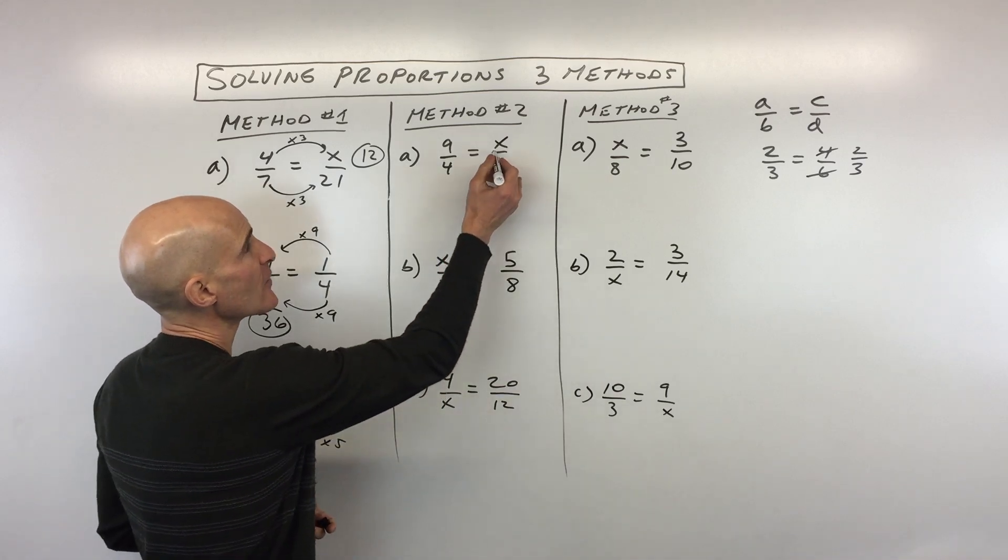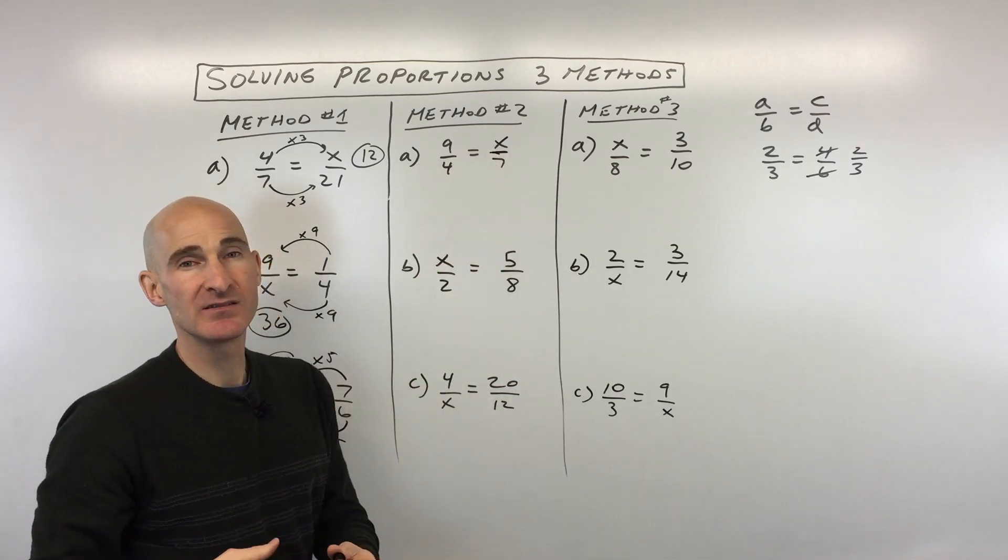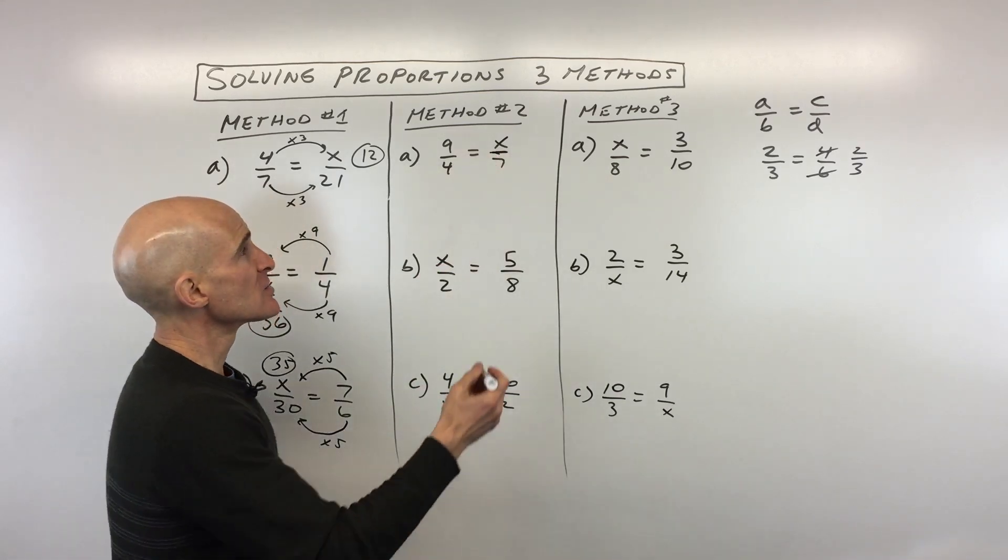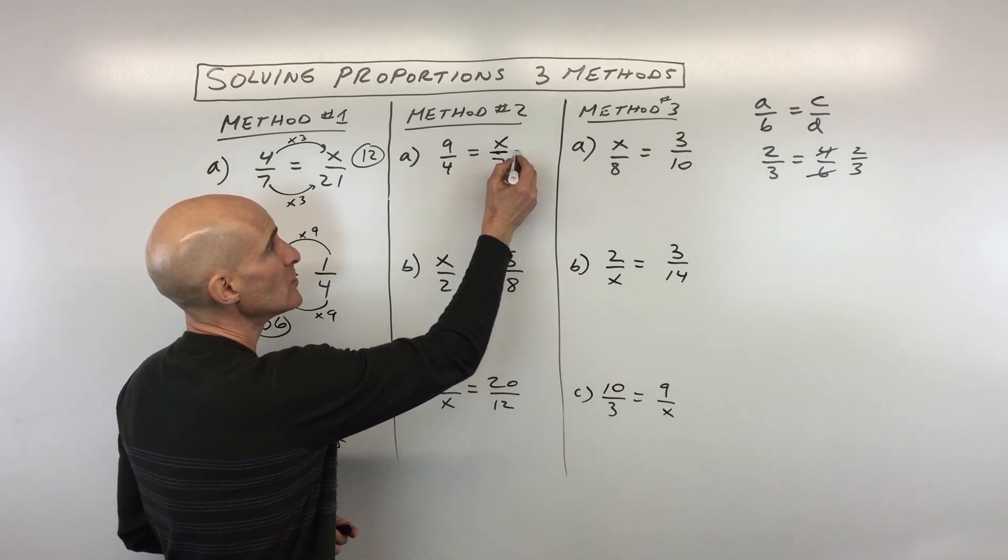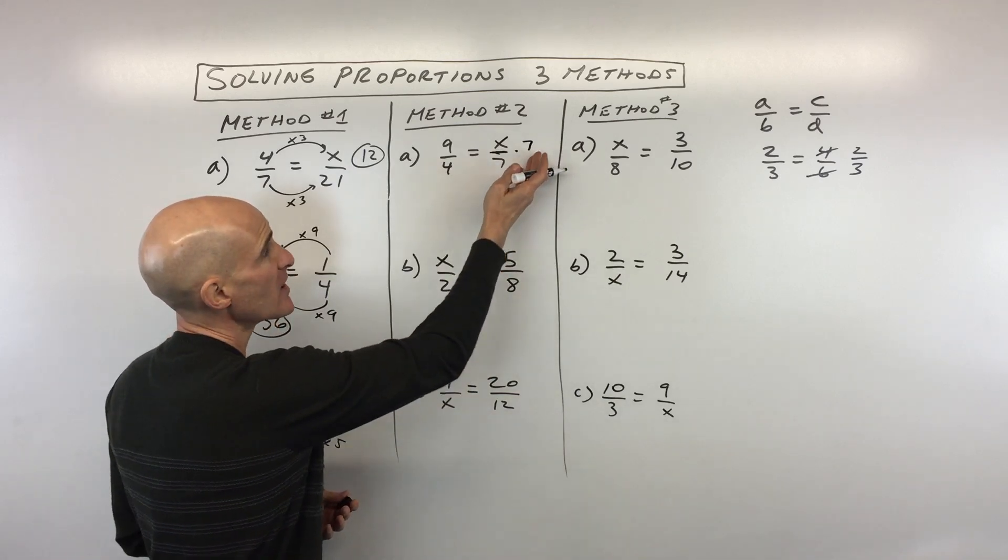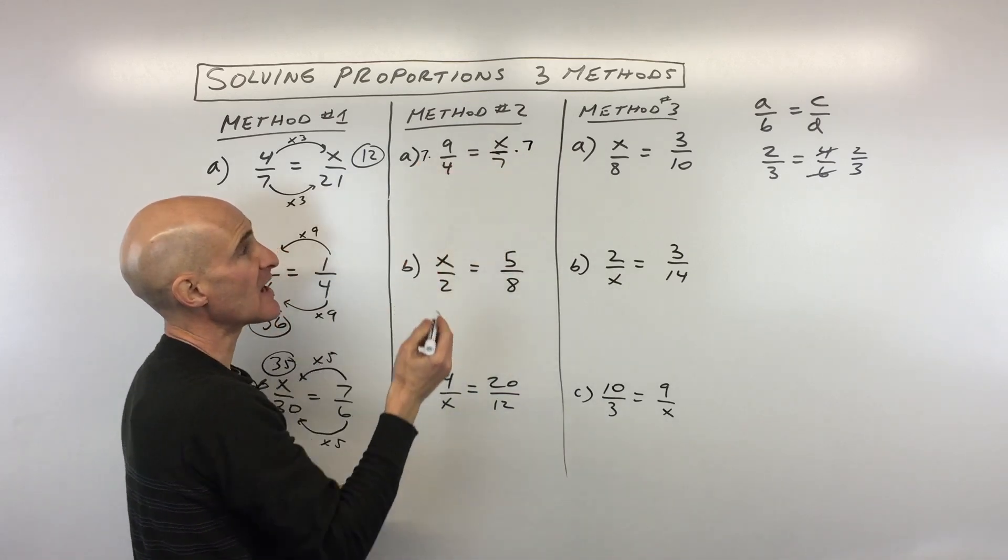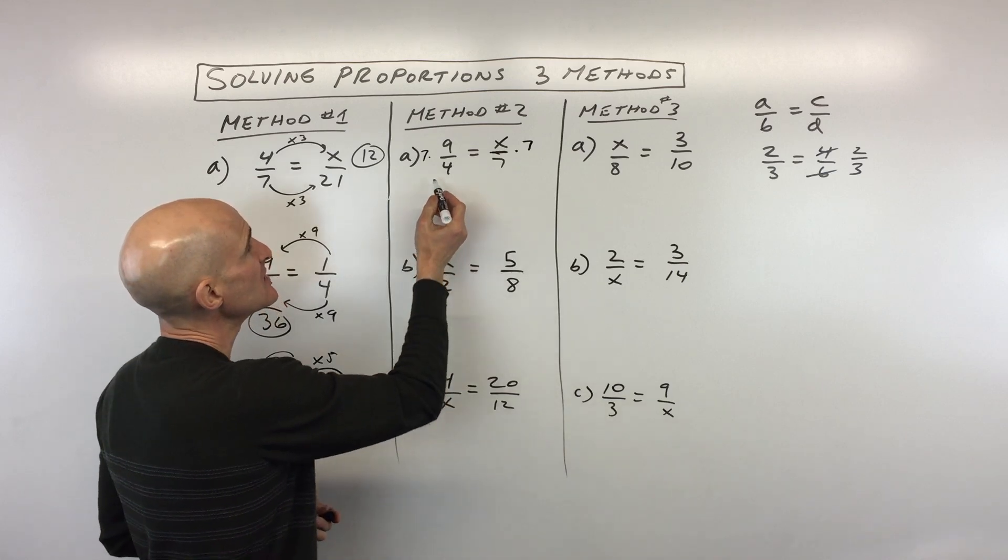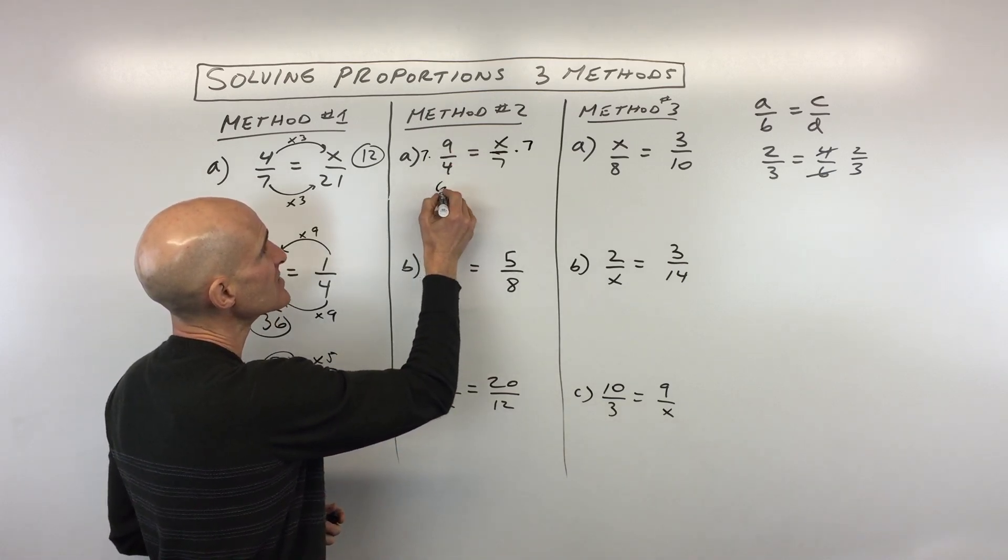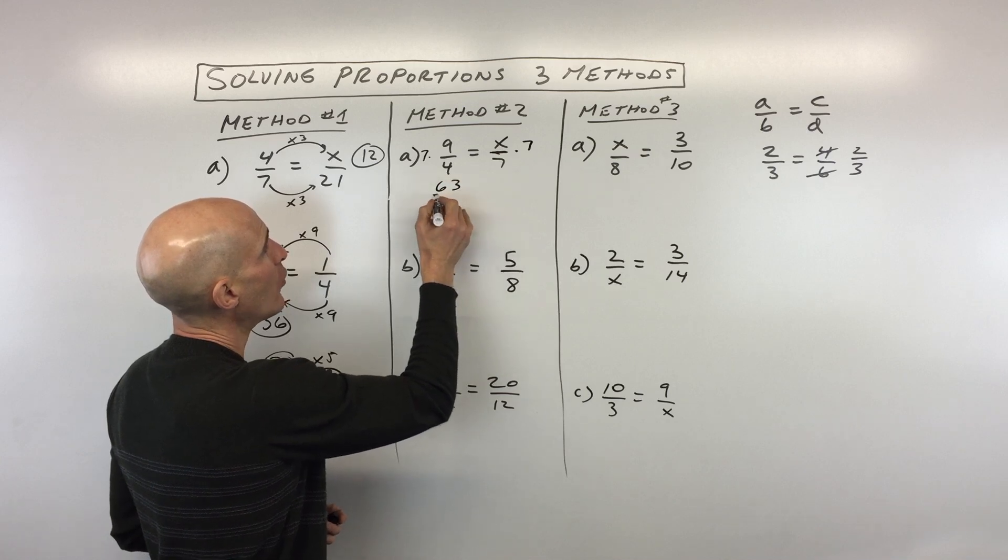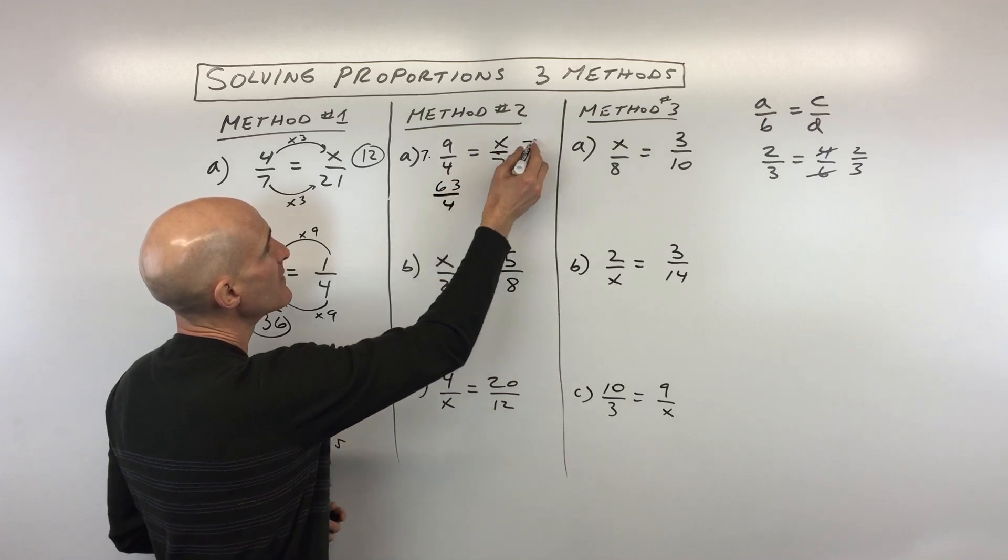So what I'm going to do here, when you see this fraction bar, that's the same thing as division or dividing. So the opposite of dividing by 7 would be to multiply by 7. Of course, if you do this to the right side of the equation, you have to do it to the left side to keep it balanced. So you can see this is going to end up being 7 times 9 is 63 over 4, these are going to cancel.